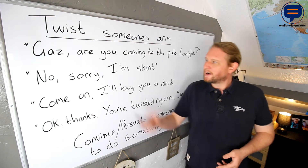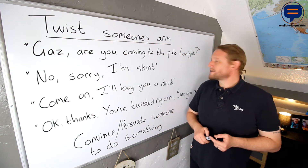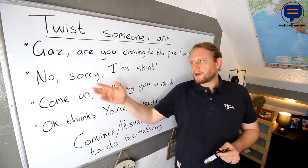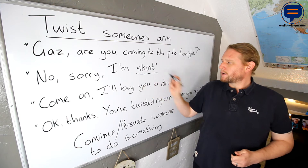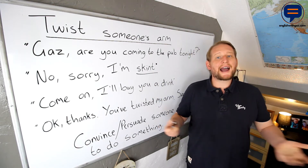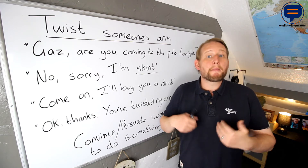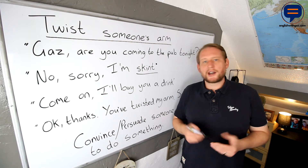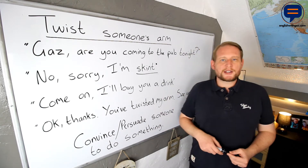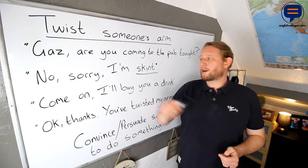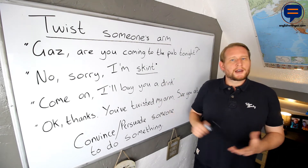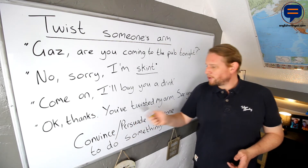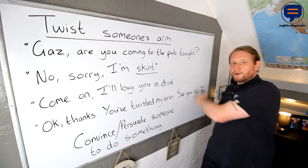My friend calls me on the phone and says, "Gaz, are you coming to the pub tonight?" — this is a world where coronavirus doesn't exist, obviously. And I say, "No, sorry, I'm skint." Skint is a slang word in English which means I have no money — not bankrupt, just I don't have much money. In American English they use the word broke; in British English we say skint. So I tell my friend, "No, sorry, I'm skint." And he says, "Come on, I'll buy you a drink." So I say, "Okay, thanks. You've twisted my arm. See you at seven."